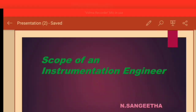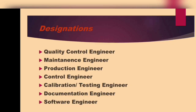Let's see about the designations that instrumentation engineering students will hold. After completing a four-year degree course, he has the ability to hold various designations such as quality control engineer, maintenance engineer, production engineer, control engineer, calibration or testing engineer, documentation engineer, and software engineer.